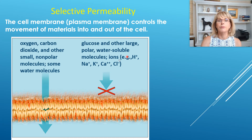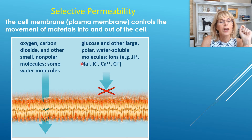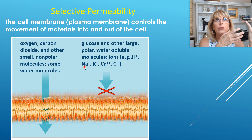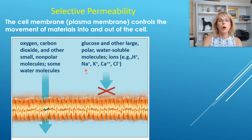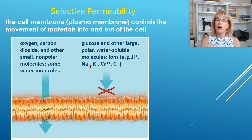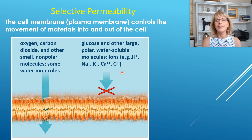Ions are very small — they are single atoms, like a sodium atom. Glucose is like 12 to 24 atoms big; sodium is one atom. But sodium cannot go across. Why? Because it is an ion — it has a charge. So things like sodium, potassium, calcium, and chloride are charged when they're in a water solution and they can't go across. Even hydrogen, which is just a single naked proton, cannot go across.